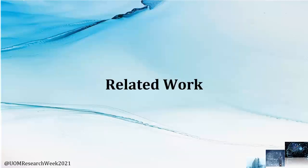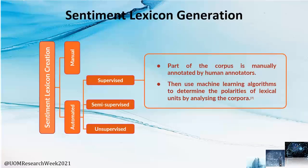Let's deep dive into the related work. Sentiment lexicon generation can be divided into two main methods: manual and automated. We are focusing on automated lexicon creation, because manual lexicon creation is cumbersome — it needs a lot of human effort and time. Automated lexicon creation can be divided into three main approaches: supervised, unsupervised, and semi-supervised. We are more focused on semi-supervised and supervised approaches, since the unsupervised approach gives less accuracy compared to the others.